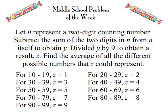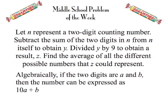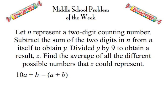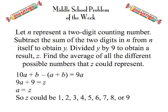Shown here that Z could be any of the digits from 1 through 9. Maybe you took an algebraic approach — express the digits as variables, which we chose A and B. A two-digit number can then be written as 10A plus B. Subtract the sum of the digits and you get an expression which simplifies to 9A. We divide 9A by 9 to get Z. Simplify and we realize that A is equal to Z. Since the digit in the tens place could be anything from 1 through 9, we've just confirmed that Z could be any digit 1 through 9.